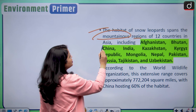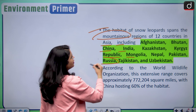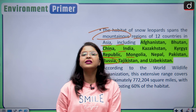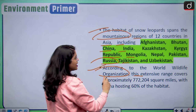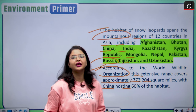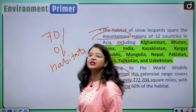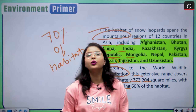The habitat of snow leopards spans the mountainous regions of 12 countries in Asia, including Afghanistan, Bhutan, China, India, Kazakhstan, Kyrgyz Republic, Mongolia, Nepal, Pakistan, Russia, Tajikistan, and Uzbekistan. Kyrgyzstan has already declared snow leopards as its national animal to protect and conserve the species. According to the World Wildlife Organization, this extensive range covers approximately 772,204 square miles, with China hosting 60% of the habitat, but notably 70% of the habitats of snow leopards are unknown — we do not have any idea about them — and that is why their protection and conservation is so significant.